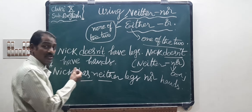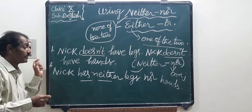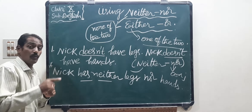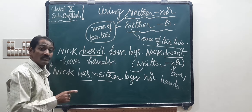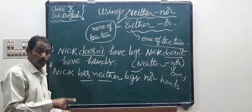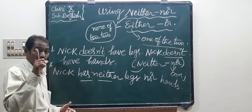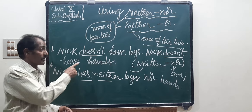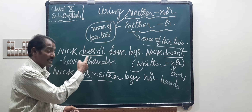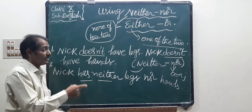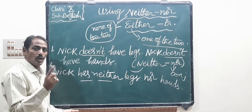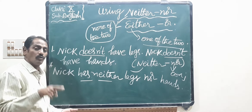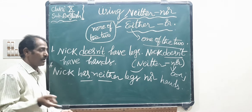See children, in each sentence neither/nor is used for a negative sentence — none of the two. Nick has no legs, Nick has no hands. So in this way we use neither/nor.